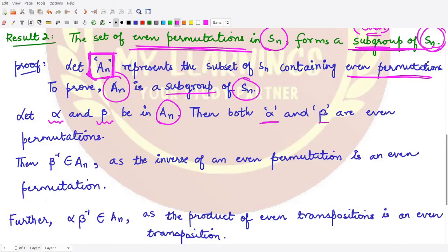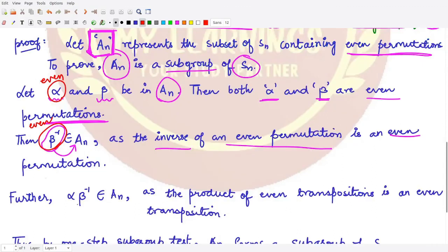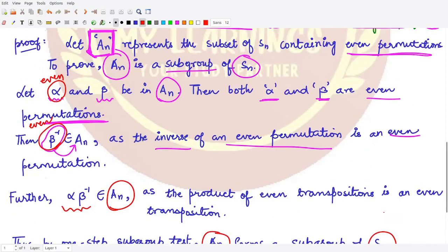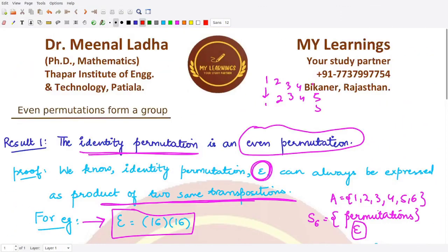Since Aₙ consists only of even permutations, both α and β are even permutations. Moreover, the inverse of an even permutation is even, so β⁻¹ is also even and would be present in the set Aₙ. Now if α is a member of Aₙ and β⁻¹ is also a member of Aₙ - both are even - then their product is also going to be even. If their product is even, then it would be a member of Aₙ. Therefore, according to the one-step subgroup test that we have studied previously, this set Aₙ basically forms a subgroup of the symmetry group Sₙ.